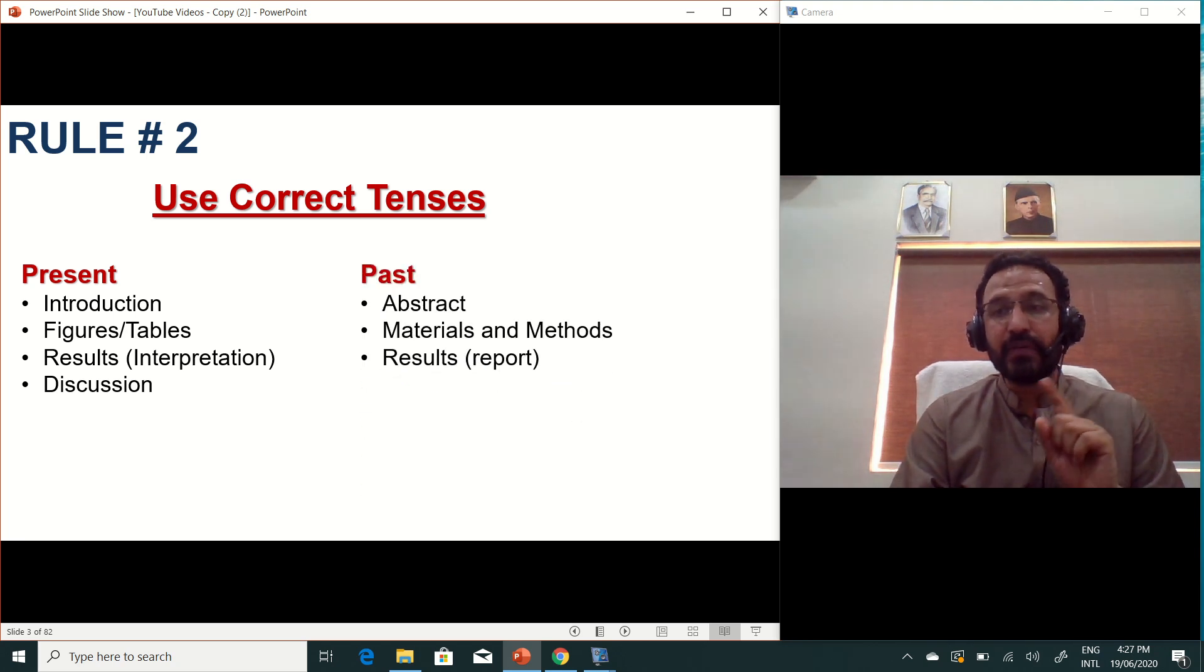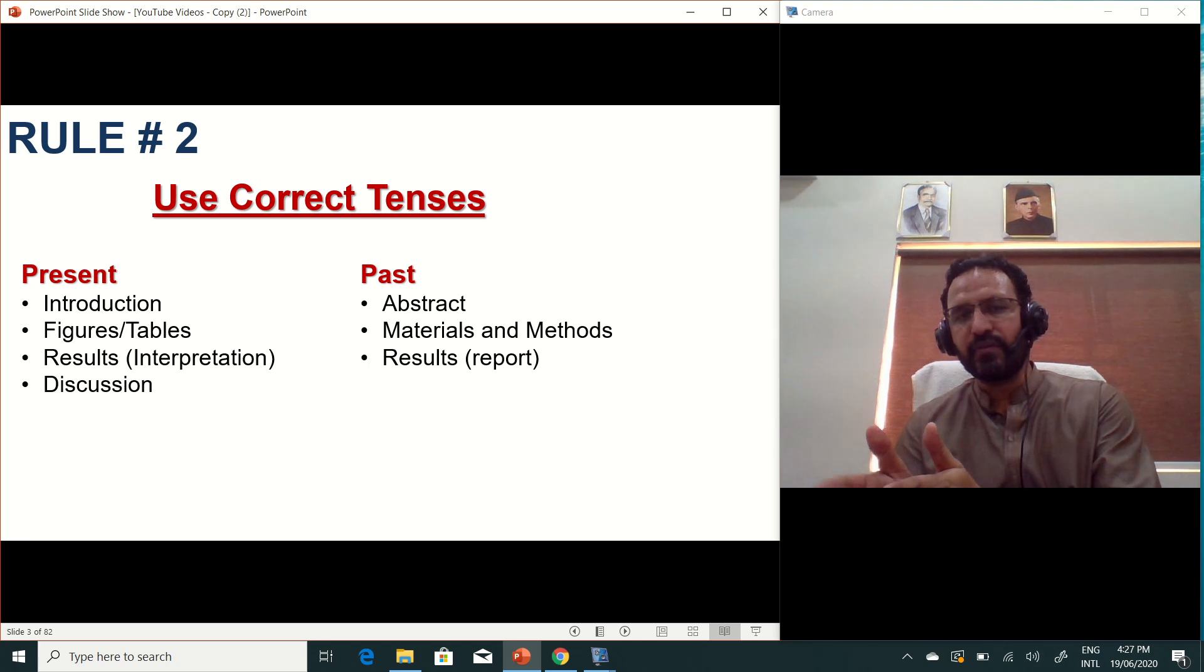Next comes past tense. When you talk about abstract, it is past: that we focused on this problem and this way we solved this problem, and these were our results. Everything will be in past. Materials and methods, because it is a past story that the experiment was done. So it is again past.